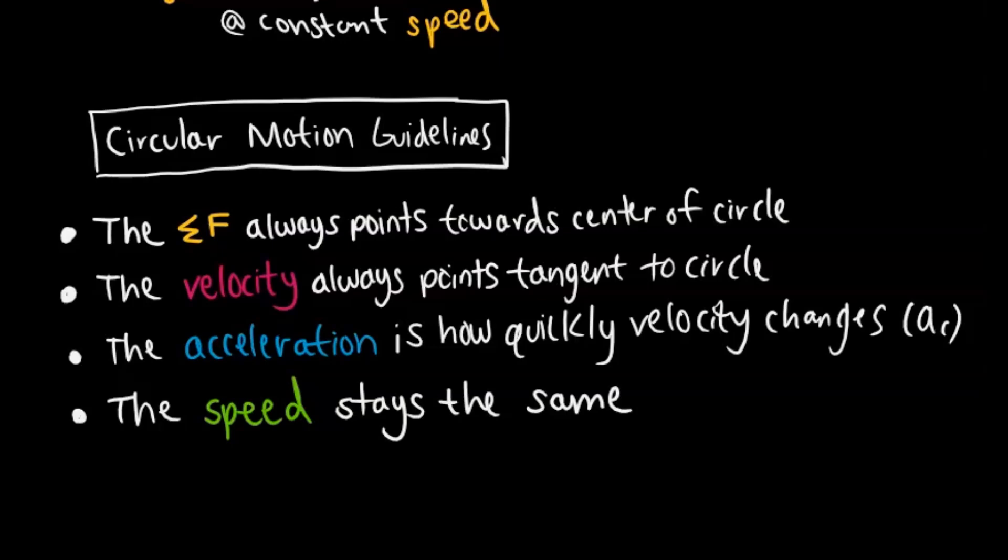The velocity is tangent to the circle. The acceleration is just how quickly the velocity changes. That's Ac. There's no force. If it asks you to draw a free body diagram, you're not going to be drawing the velocity or the acceleration on there, obviously. And the speed stays the same.